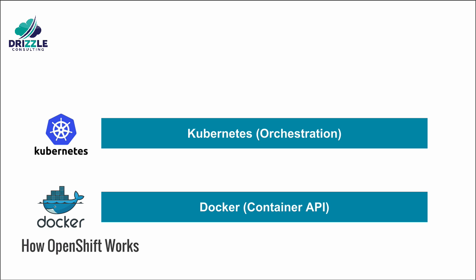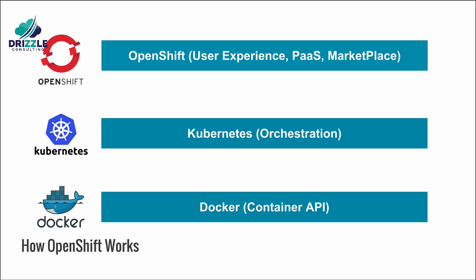Kubernetes is an open source project created by Google that manages containerized applications across a set of containers or hosts and provides mechanisms for deployment, maintenance and application scaling, while Docker packages, instantiates and runs containerized applications. OpenShift is a layer on top of Docker and Kubernetes that makes it accessible and easy for the developer to create applications and a platform of deployment for containers for both development and production workloads.